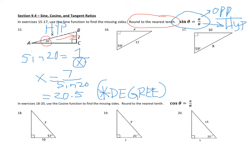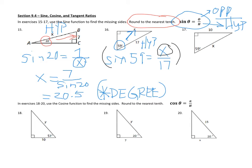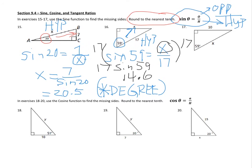Number 16: the angle is 59°, x is the opposite leg, and 17 is the hypotenuse. Set up: sin(59°) = x/17. Since the missing part is on top, multiply by the denominator: x = 17 × sin(59°). Entering into the calculator and rounding to the nearest tenth gives 14.6. You do number 17.